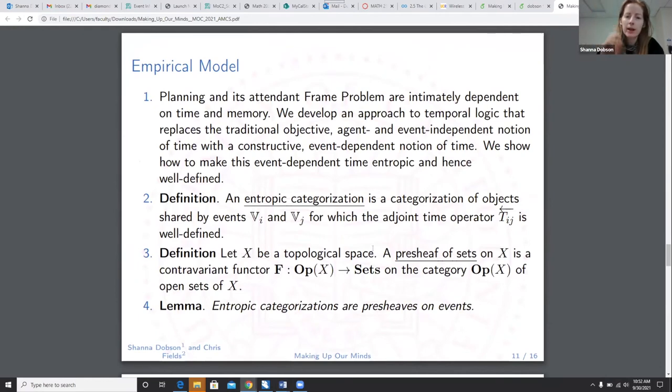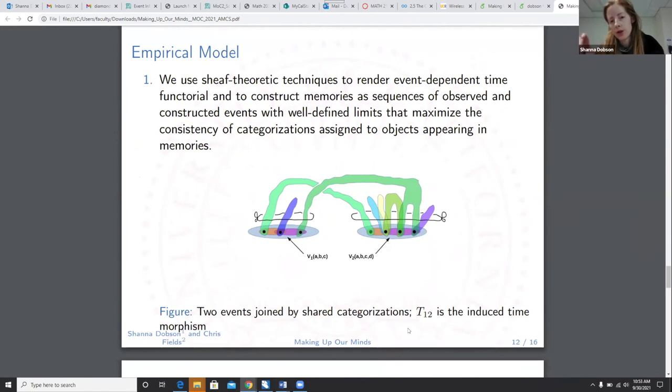So take your empirical model. Planning and its attendant frame problem are intimately dependent on time and memory. We develop an approach to temporal logic that's going to replace the traditional objective agent and event independent notion of time with a constructive event dependent notion of time. We're going to make this event dependent time entropic and well-defined. So an entropic categorization is a categorization of objects shared by events, V-I and V-J, where we're taking events as multi-hypergraphs for which the adjoint time operator is well-defined. That's what makes it entropic. Let X be a topological space, a pre-sheaf of X is this contravariant functor. One of our lemmas: entropic categorizations are pre-sheaves on events.